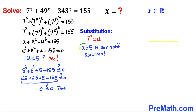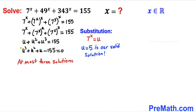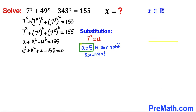We conclude that u equals to 5 is one of our valid solutions. Since our highest degree is 3, we are supposed to have at most 3 solutions. We already figured out u equals to 5, so let's figure out the two other solutions using synthetic division.